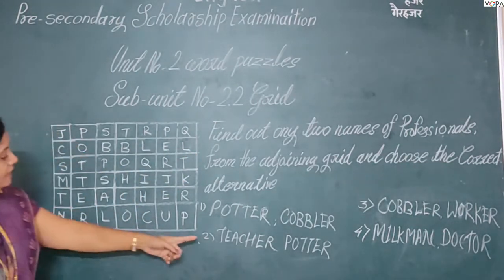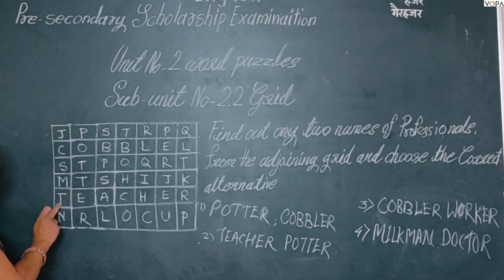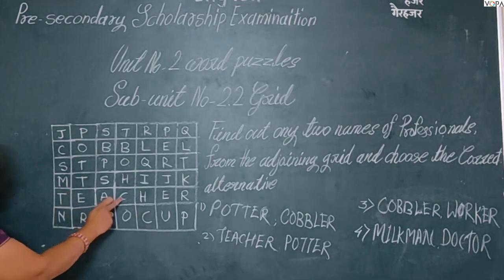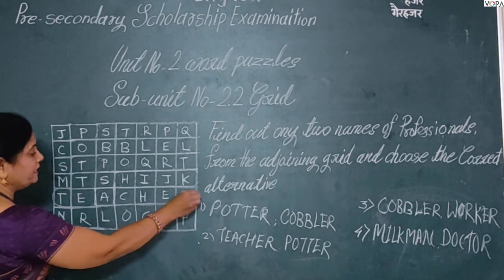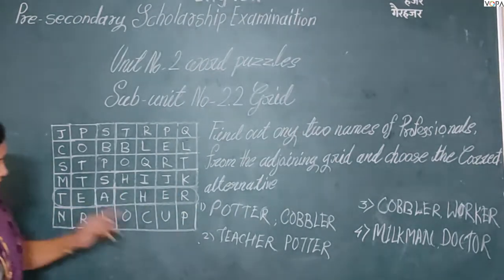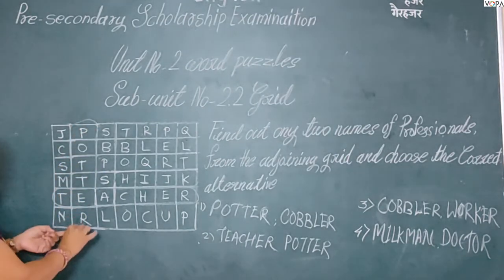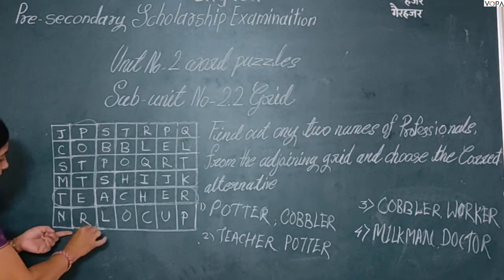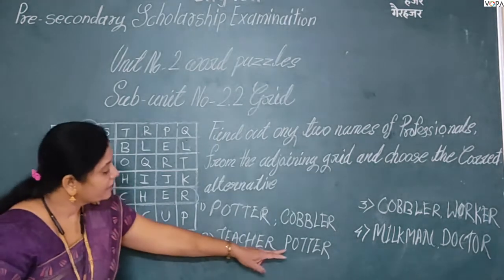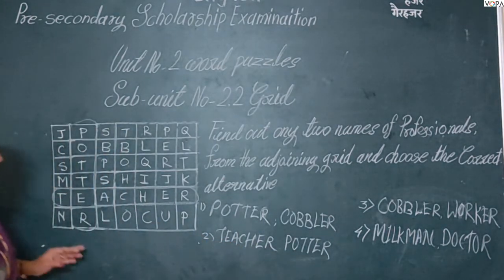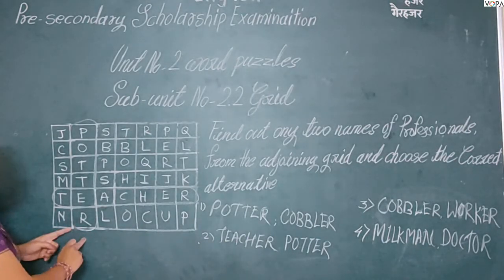The second option is teacher and potter. The word 'teacher' can be found in the grid, and 'potter' is also present. So the second option — teacher and potter — is correct.